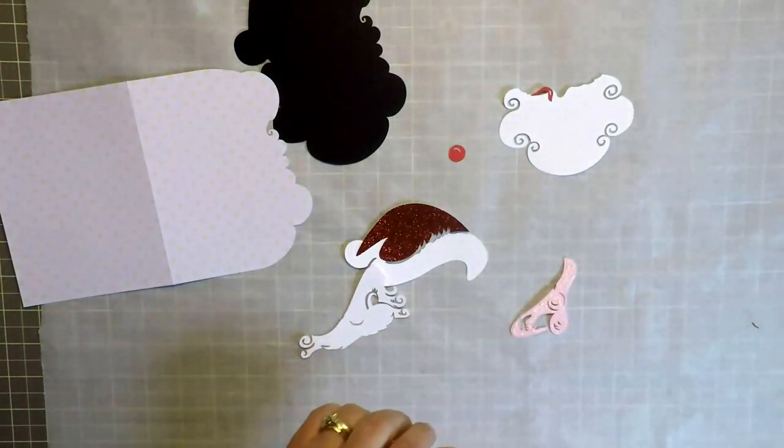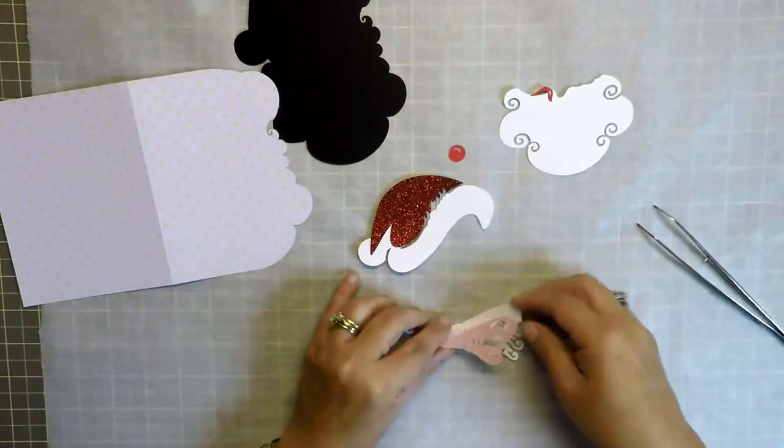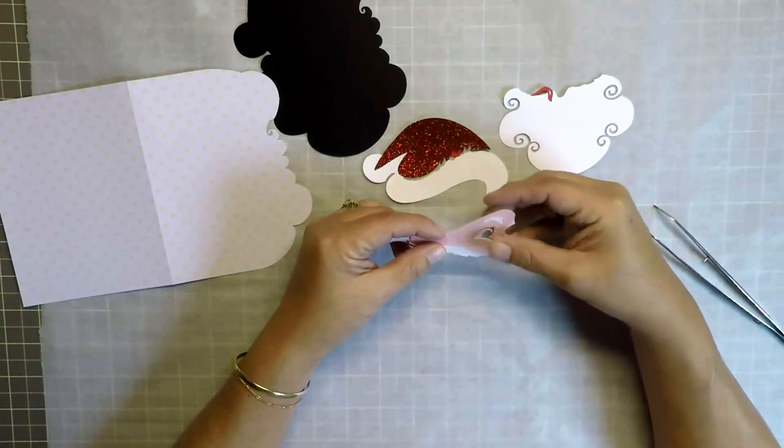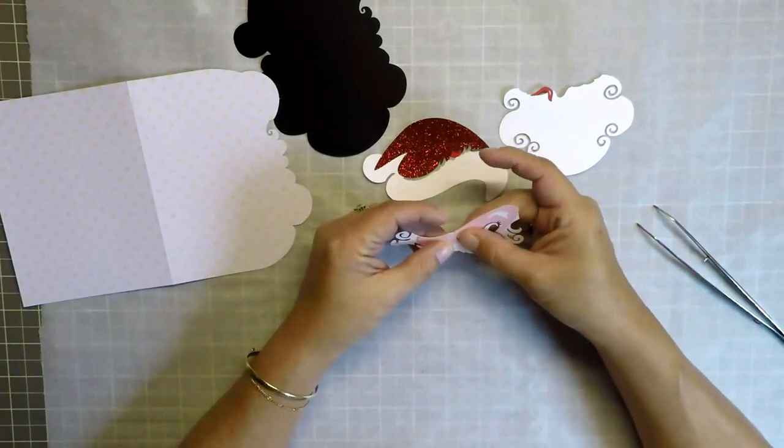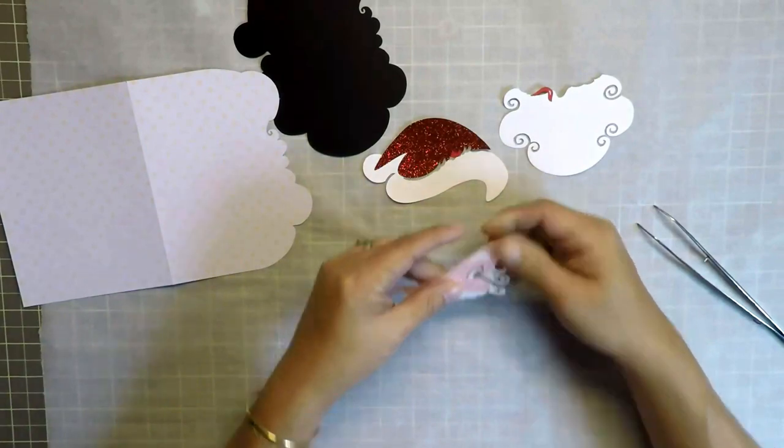Well, I ordered this glue bottle and it comes with the tip. It's called a fine tip, fine line applicator. In the comments below, I'll go ahead and add the link to where I got it. It came in a pack of two when I purchased it.